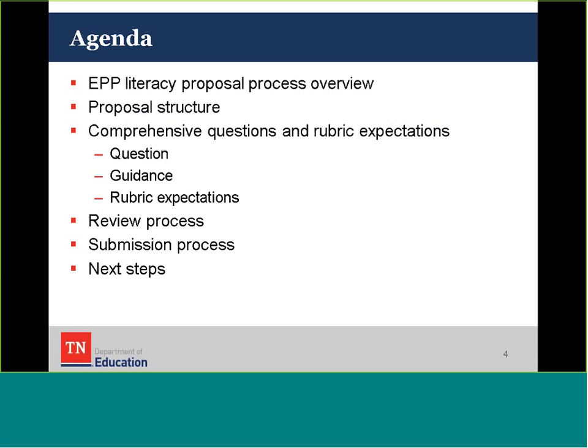Here's a brief overview of our agenda. We've got Proposal Process Overview — we'll spend a little time understanding the context and history for why we're engaging in this process. We'll talk briefly about our proposal structure, then spend the bulk of time on the comprehensive questions and rubric expectations — specifically the questions being asked, drafting guidance, and rubric expectations for each. We'll also touch on the review process and submission process, which will be discussed at length at our October 29th meeting.